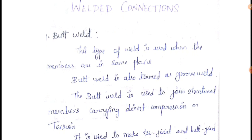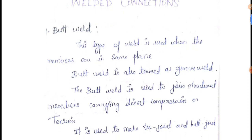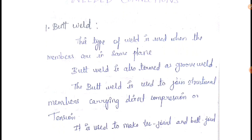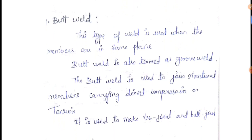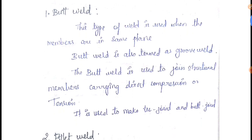So first we have to look at the butt weld. In a weld we have to look at the lap joint and butt joint. So in a butt joint, we use this type of weld when the members are in the same plane, so we have to use the butt weld.